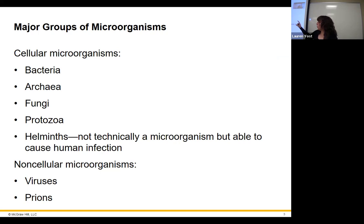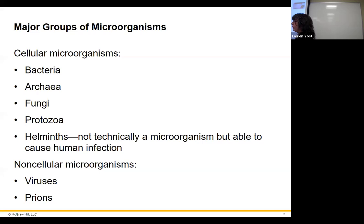Microorganisms that actually have cells include bacteria, something called archaea, fungi, protozoa, and helminths. Having cells is kind of how we've defined living things. Archaea are very similar to bacteria but typically live in extreme environments, though some archaea live in your mouth and can be involved in dental caries — tooth decay — which is actually the number one microorganism-caused disease in all of humanity.